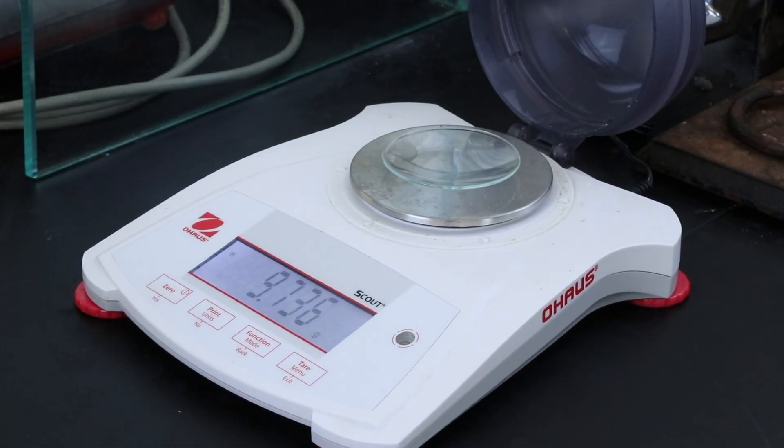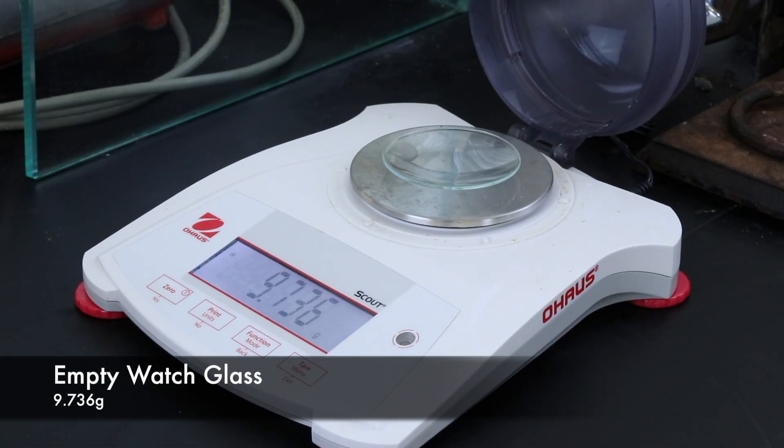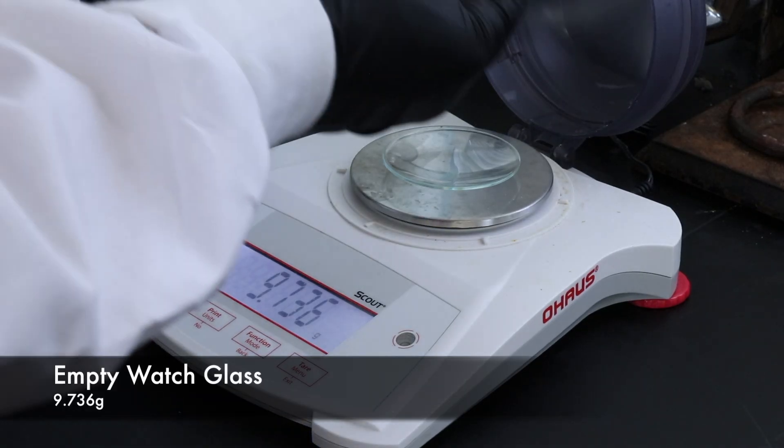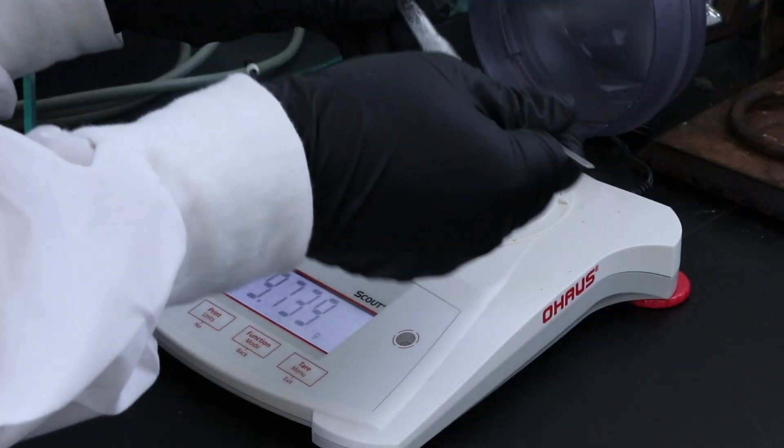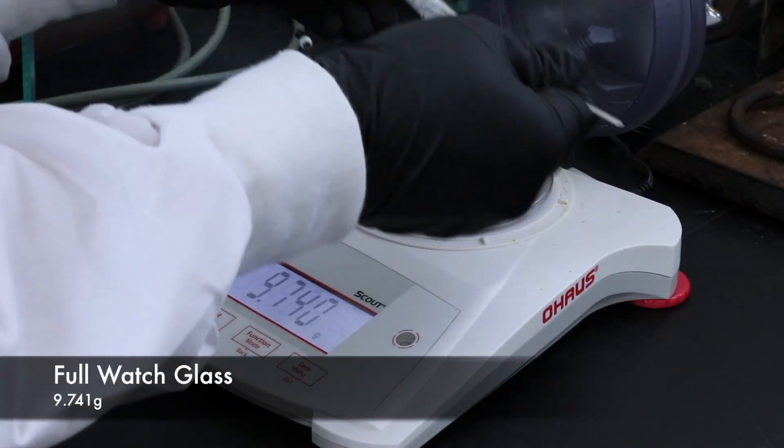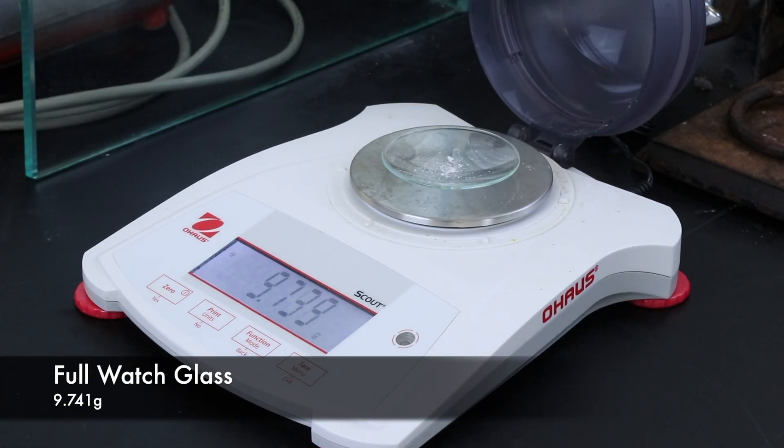Now I'll weigh out the crystals so we can calculate a percent yield. The empty watch glass is about 9.736 grams and the product only made it jump up to 9.741 grams, so I didn't isolate very much but let's characterize it to see how pure it is.